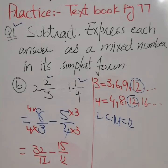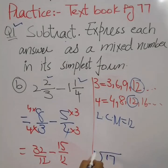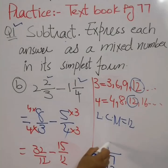17 over 12 is an improper fraction. We simplify it as a mixed number by dividing 17 by 12. The quotient becomes the whole number, the remainder becomes the numerator, and the denominator remains the same.